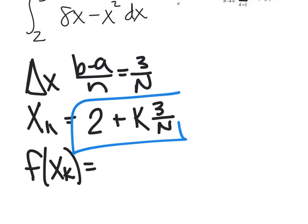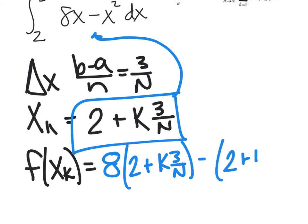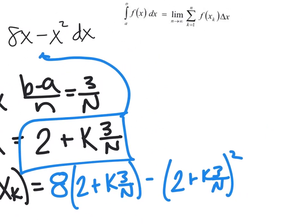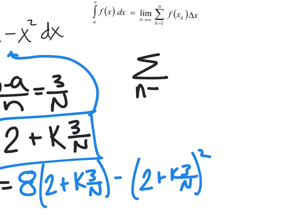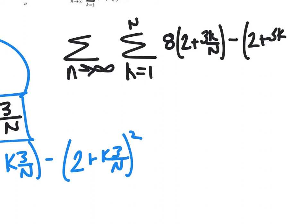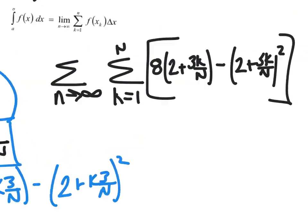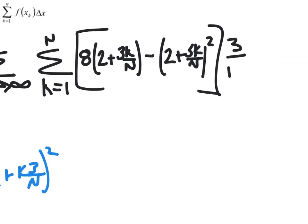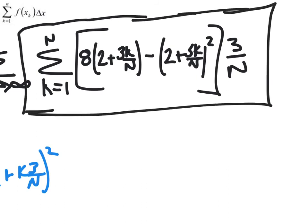Then, you need to find f of x sub k. Okay, so you're going to take all of this and put it into your function. So, I'm going to have 8 times 2 plus k times 3 over n minus 2 plus k times 3 over n squared. Now, you can clean it up as much as you want, but your goal is obviously to match it to the multiple choice answer. And then, I need to plug this back into my definition. So, I'm going to say this is the sum from n approaching infinity. Or, I'm sorry, the limit as n approaches infinity from k equals 1 to the sum of n of this thing here. So, we're going to have 8 times 2 plus 3k over n minus 2 plus 3k over n squared. And, it's all of that times, if you look back at that formula, your delta x, so times 3 over n. Okay, so again, go back, re-watch any video that you need to, but we need to be pretty darn aware of this.